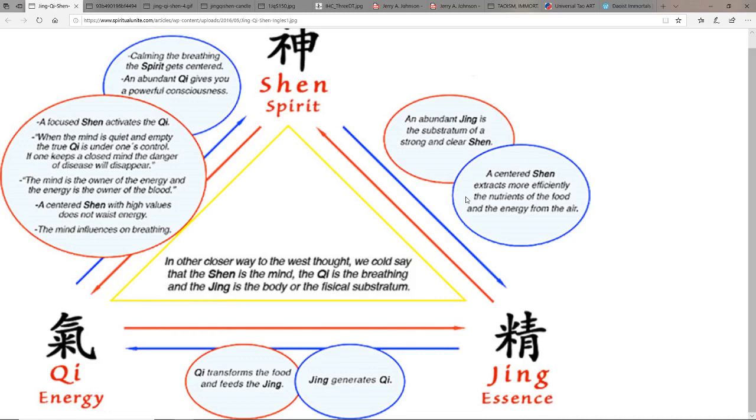And the energy from the air. An abundant jing is the substratum of a strong and clear shen. Calming the breath, the spirit gets centered. An abundant chi gives you a powerful consciousness. A focused shen activates the chi. When the mind is quiet and empty, the true chi is under one's control. If one keeps a closed mind, the danger of disease will disappear. The mind is the owner of the energy and the energy is the owner of the blood. A centered shen with high values does not waste energy. The mind influences the breathing.